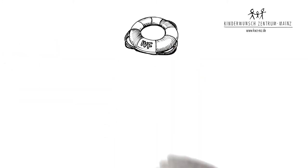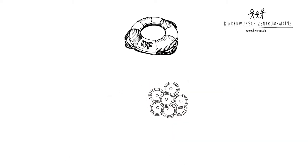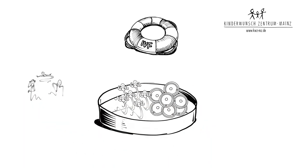In IVF, Lily's ovaries are hormonally stimulated, so they produce as many mature eggs as possible, which then are collected under anesthesia. This is called egg retrieval. The mature eggs are put in a nutrient solution and fertilized with Tom's healthiest sperm.